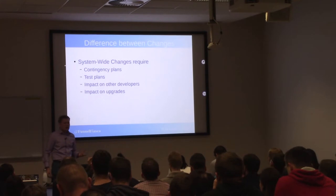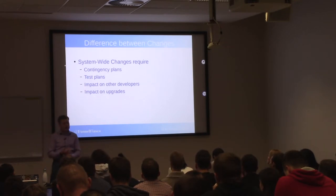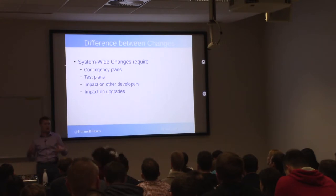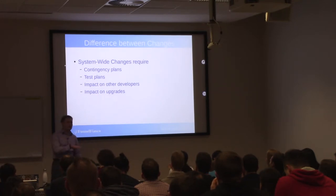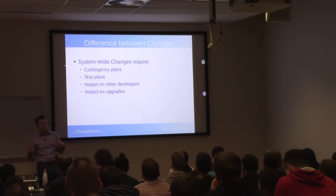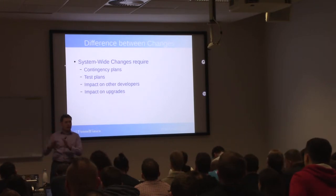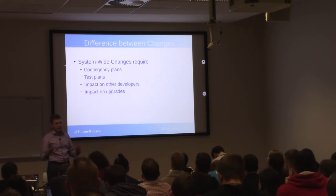System-wide and self-contained changes are fairly similar, but we have a little bit more for system-wide changes because of their bigger impact. Those are required to have a contingency plan, a test plan, and lists of the impact on other developers and on upgrades — for example, if a user is going from Fedora 28 to Fedora 29, will your change break them, or make it impossible to revert? These are all things that are very important to know about. It's not "you can't do this because it has an impact" — we just need to know about it and plan for it.